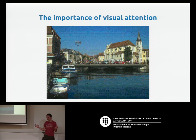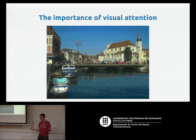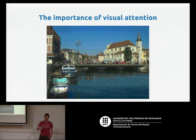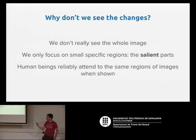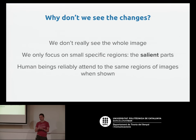So we think we see everything in the image when we look at it. We have this illusion that we're seeing the entire picture, but we're not. We're only focusing on very specific parts — the salient parts — and our brain just fills in the rest with convincing-looking content. You can think of it as having a little generative adversarial network in the back of your head generating realistic-looking content. We don't actually see the whole image. We mainly focus on some small specific regions. But interestingly, we don't all focus on different regions — we're quite reliably drawn to the same kinds of things.